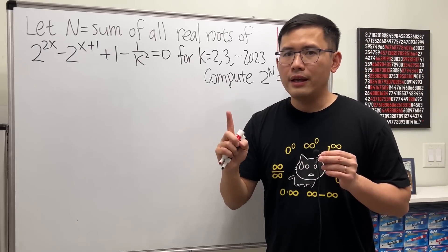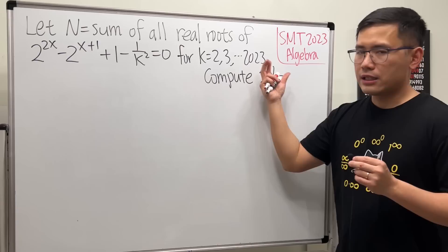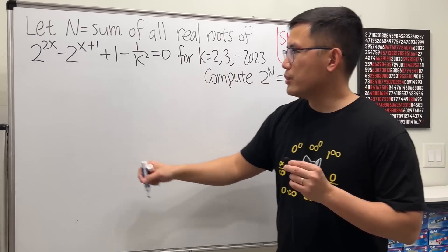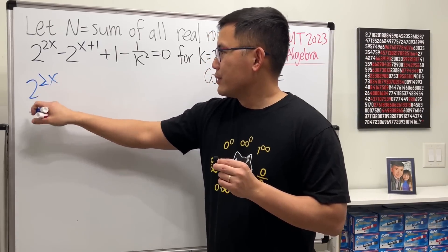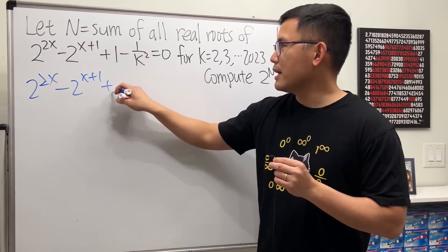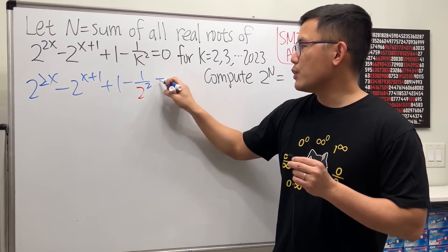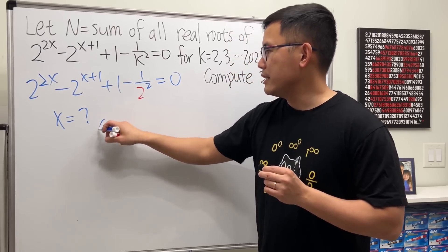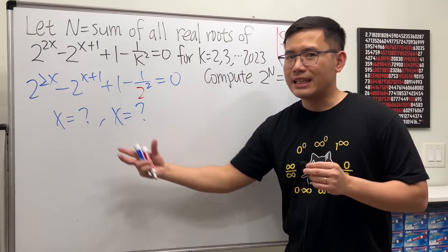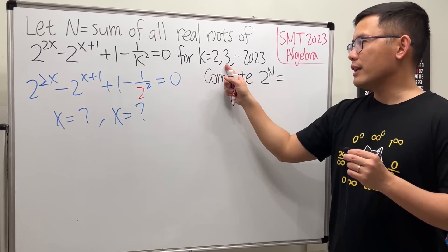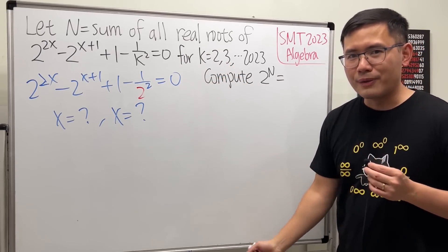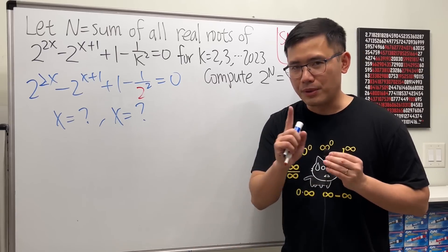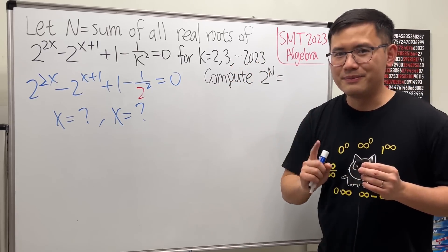We don't just have one exponential equation — we have a lot of them, because for each k, imagine k is equal to 2: you look at 2^(2x) minus 2^(x+1) plus 1 minus 1 over 2 squared equals zero. Find what x is, get two solutions, add them up, then move to the next k and so on. But of course this is not the way to go. Pause the video now, think about it first, then let's see.